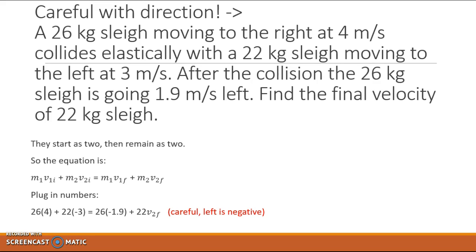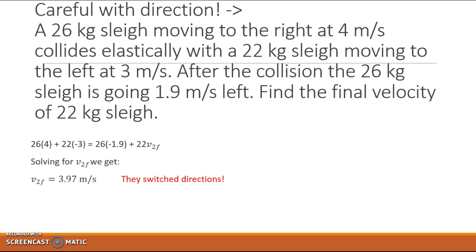Notice that the second mass has a negative velocity at the beginning. The first mass has a negative velocity at the end. Keep track of that because the left is negative. We solve for v2f and you get 3.97 m/s.